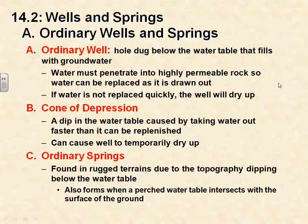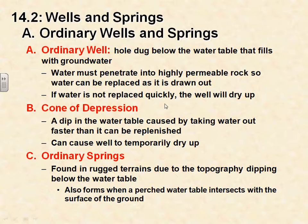When water is drawn from a well, it's kind of like a straw in a milkshake — you get a V or cone of depression around the well. Water takes the path of least resistance, so it's easiest to pull right around the edge of the straw, and the same is true for a well. This cone of depression can actually draw other people's wells dry until water can permeate back into the area.